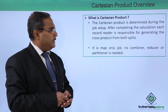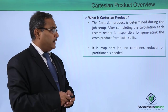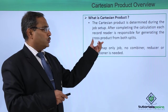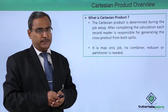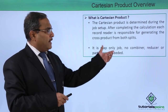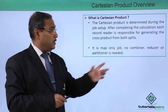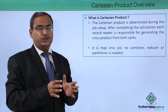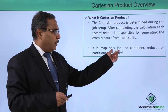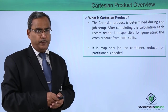The Cartesian product is determined during the job setup, and after completing the calculation, each record reader is responsible for generating the Cartesian product from both the splits. So at the initial setup we must know that we are going for the Cartesian product, and here the record reader is responsible for the generation of the final outcome. It is a map-only job, so no combiner, no reducer, or partitioner will be involved here.